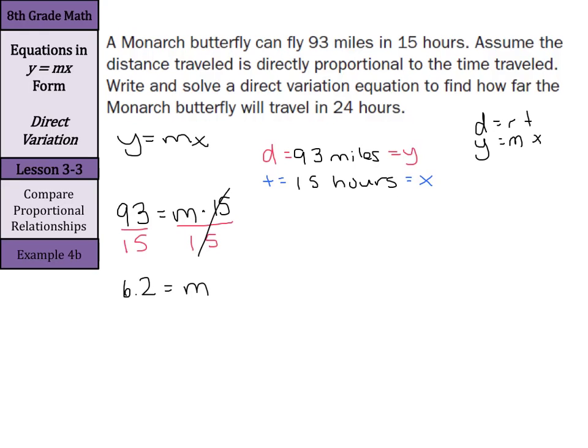In other words, the butterfly is traveling at 6.2 miles per hour. Now once this is done, I can set up an equation using that y equals mx. Y equals 6.2x.